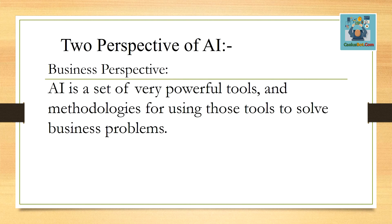There are two perspectives of AI. The first is the business perspective: AI is a set of very powerful tools and methodologies for using those tools to solve business problems. Artificial intelligence works across a lot of business areas — for example, robots do a lot of work in our businesses.